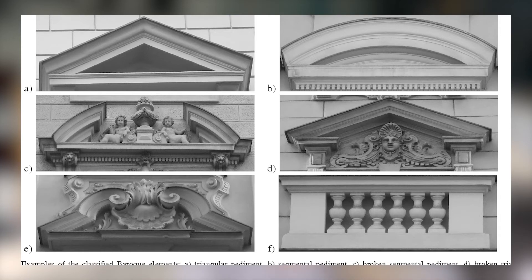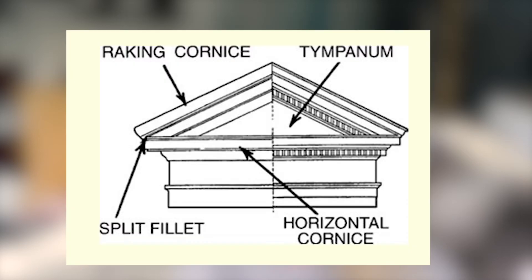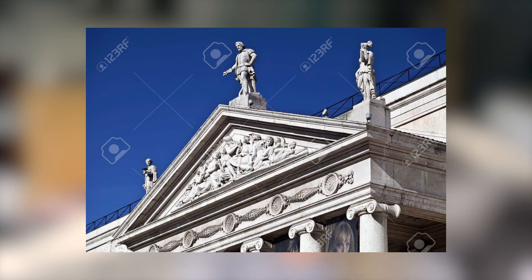Regarding its actual pediment parts, protruding molding in the pediment is called a cornice, and it adds visual depth. The flat vertical surface within the cornice is the tympanum — it's the area enclosed by a pediment. This area is often decorated with sculpture.